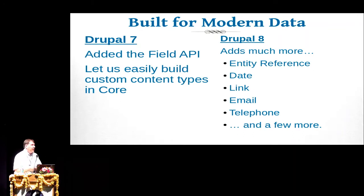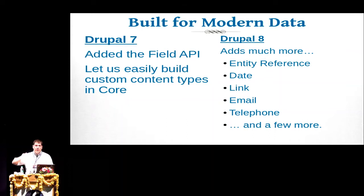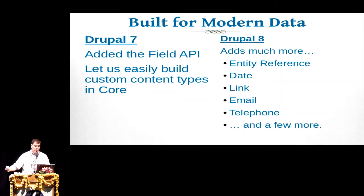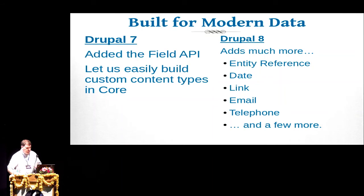We've also tried to build Drupal 8 so that it's built for modern data. We added a bunch of data types — what are called content types in Drupal — things like references to another object, a date, a link, an email address, or a telephone number. Those are all standard objects now in Drupal 8, where in Drupal 7 you would have had to go and download third-party modules to get that sort of functionality built in.